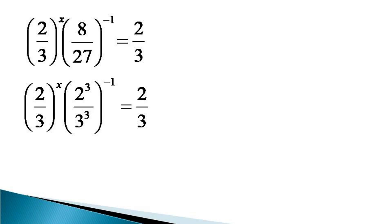Since in the second term on the left hand side both numerator and denominator have the same power, the equation can be written as (2/3)^x times (2/3)^(-3) equals 2/3.